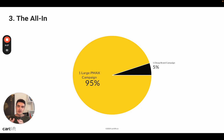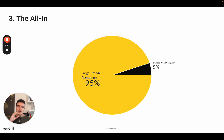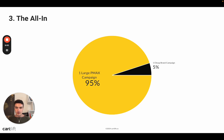You can use the PMAX setup if you meet certain criteria, which I'll talk about in a second. But generally, you should really focus on shopping and search first so you can accumulate data and have full control. PMAX can really perform well if you have conversion data, ideally a whole bunch of products, and great assets — then you can take PMAX to spending $1,000, $2,000, or $5,000 a day. But if you're a small brand with a small Google Ads budget, PMAX certainly isn't your best friend.